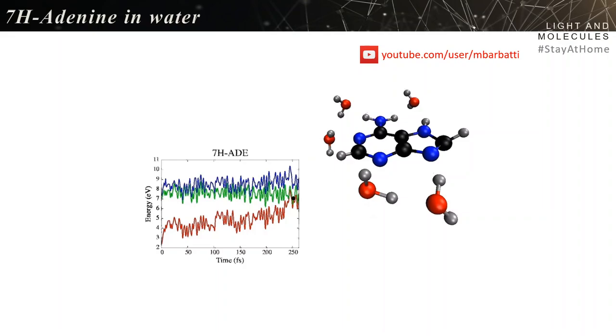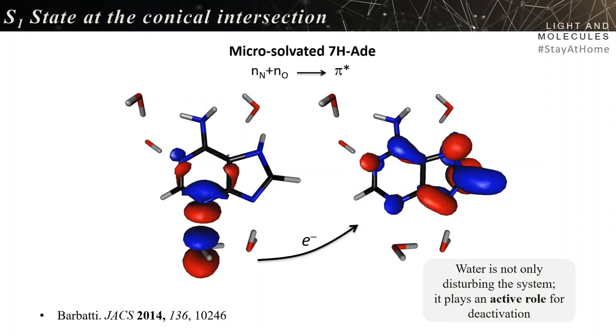I've been computing conical intersections of molecules for many years, and every time a conical intersection is caused by strong deformation - ring puckering, twist, or dissociation. So what's causing the conical intersection here? If you look at the electronic density, you see an electron transfer from water to the imidazole group of adenine. Water is not only disturbing the system, it plays an active role for the deactivation.